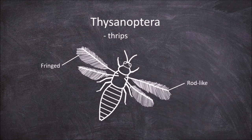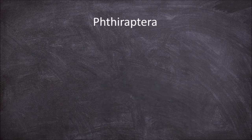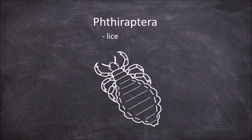The next order is the Phthiraptera, which are the lice. Members of this order are small, wingless and are all parasitic.